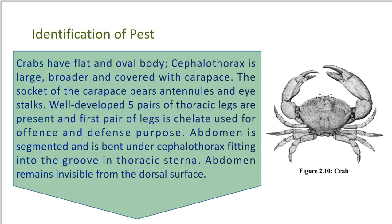Now we can see the identification marks of such a pest. Crabs have a flat and oval body. The cephalothorax is large — the head and thorax fuse to form the cephalothorax. The body is divided into two parts: the anterior cephalothorax and the posterior abdominal region or opisthosoma. The cephalothorax is broader and covered with the carapace, which is the hard and tough cuticular covering. The carapace bears sockets, beards, antennules and eye stalks.